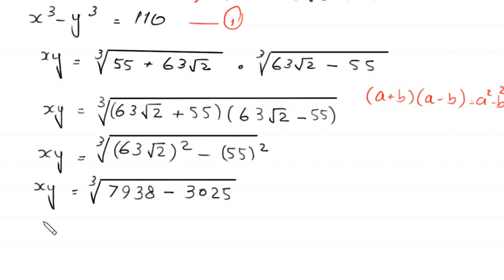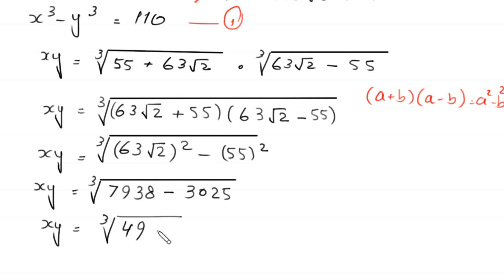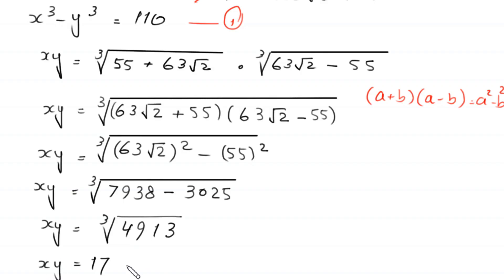So xy = cube root of (7938 − 3025) = cube root of 4913 = 17. Therefore xy = 17. We call this Equation 2.